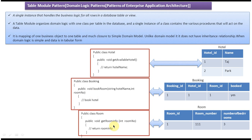Now if you read the first explanation again — a single instance that handles the business logic for all rows in a database table — each instance corresponds to one table. The second explanation is also clear: a Table Model organizes business logic with one class per table in the database, and that class contains various procedures to act on the data, such as getting, updating, and inserting information.